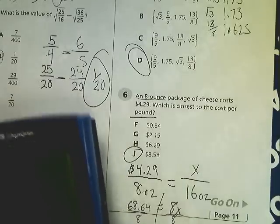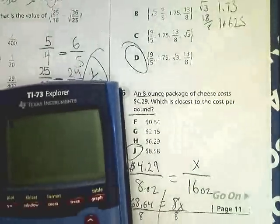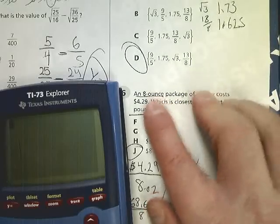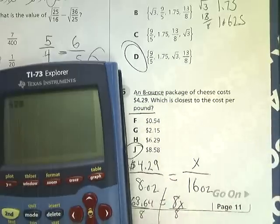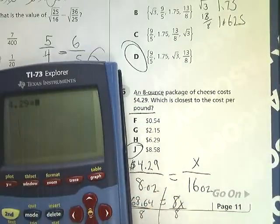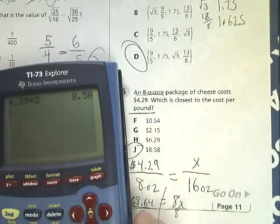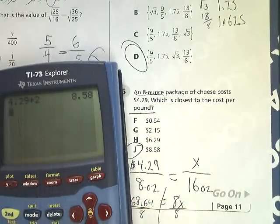You might be able to convert it if you know that two 8-ounce packages would need two of these because two eights is 16, and then you just do 4.29 times two. That's fine too. I would set a proportion here. That's just the way they like to do it, and that's number six.